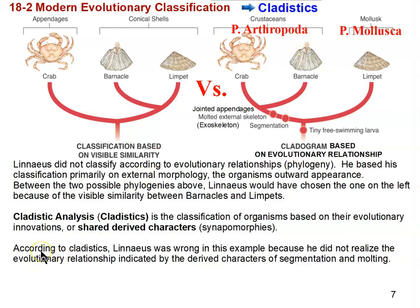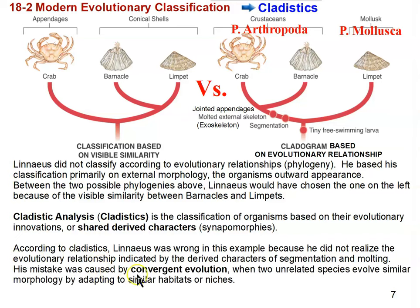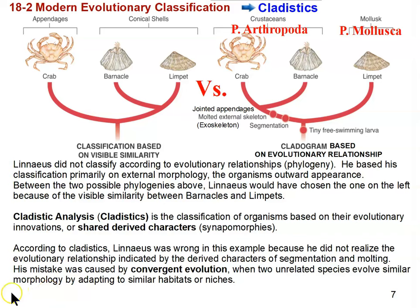Linnaeus was fooled by the concept of convergent evolution. The reason that barnacles and limpets have a similar outward appearance is not because they're closely related to each other — it's because they live in a similar niche. They live attached to rocks and don't want to be knocked off by crashing waves, so they've taken on this conical shape to be more hydrodynamic. They are unrelated species that have evolved similar morphology because they've adapted to a similar habitat or niche. That's also known as convergence.